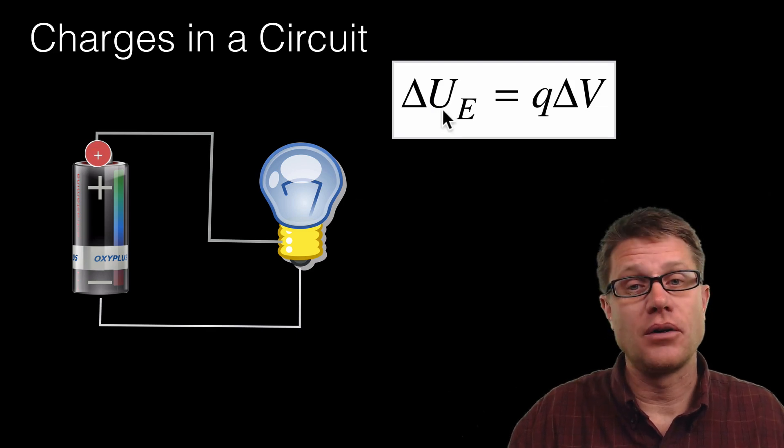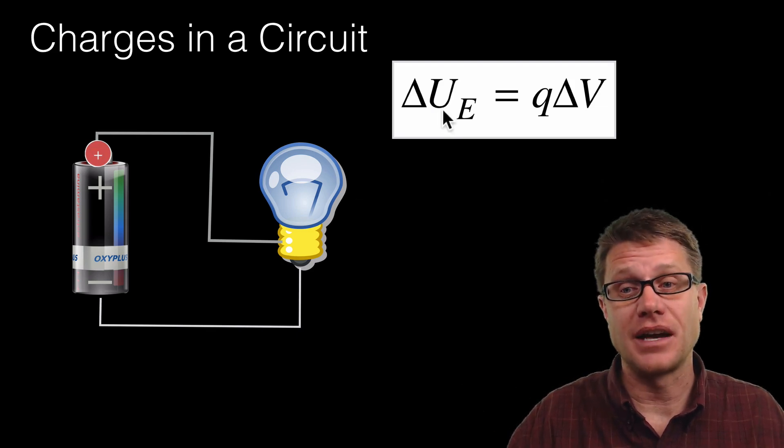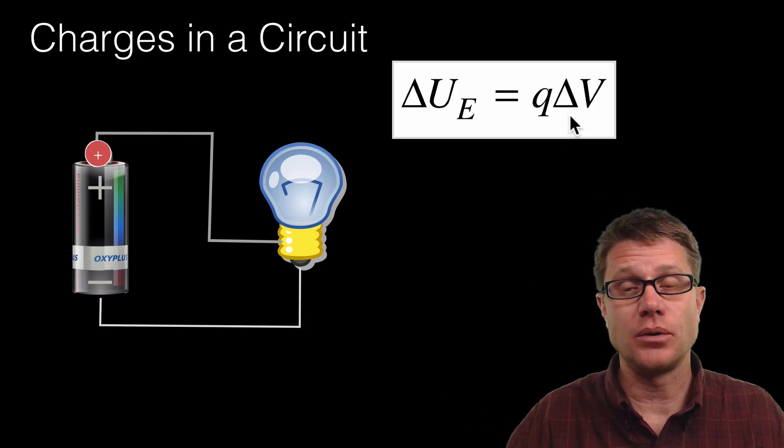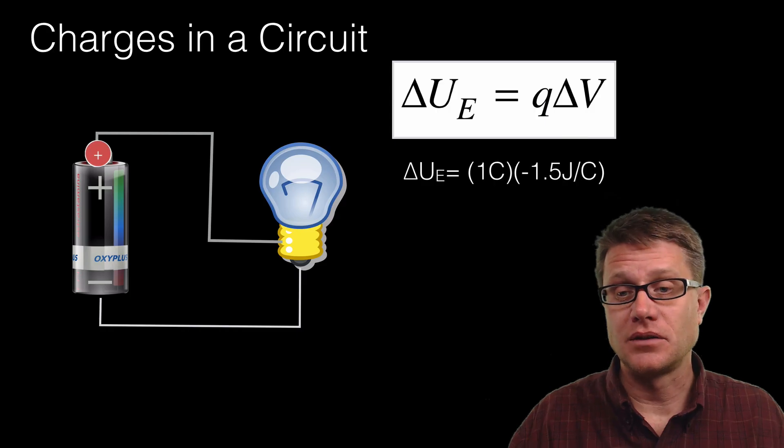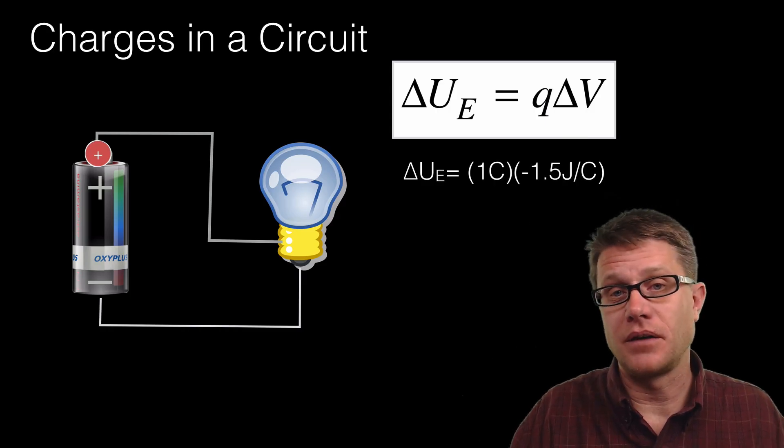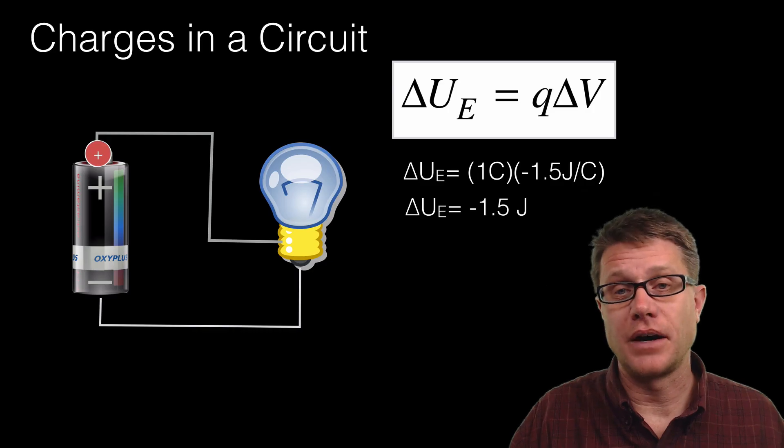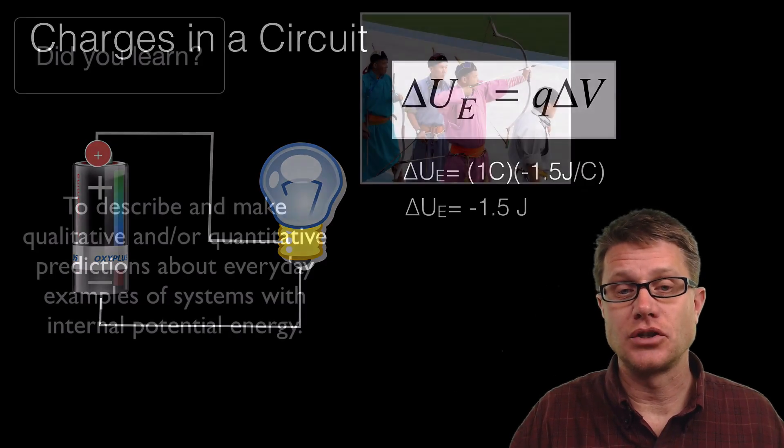That equation, or the amount of potential electric energy, is going to be equal to the charge—what charge we have—times the change in voltage, change in potential. If it is a 1 coulomb charge and we have a 1.5 volt battery, we are going to get negative 1.5 joules of energy just on that one charge.